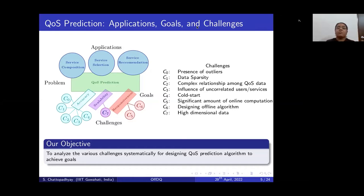For high responsiveness, we need to reduce online computation and design an offline algorithm, because we cannot afford to train our model online as that increases prediction time. To ensure high scalability, our algorithm must be able to handle high-dimensional data. These are the challenges we try to address in our method to achieve all three goals.